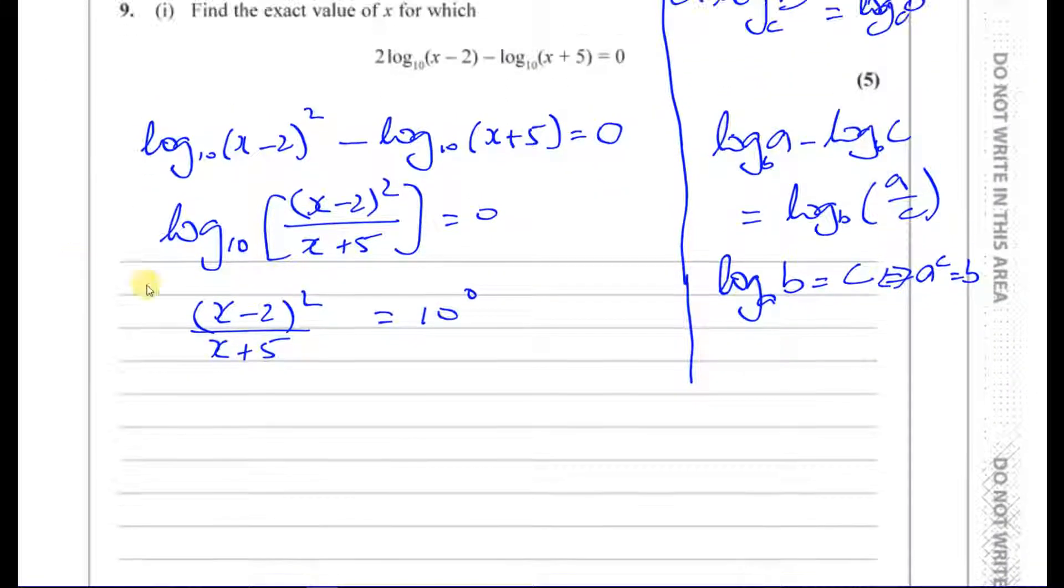So we can now solve this equation. We can say (x minus 2) squared is equal to 1 times (x plus 5). So you've got (x plus 5). We can expand the bracket here. We're going to have x squared minus 4x plus 4 equals x plus 5.